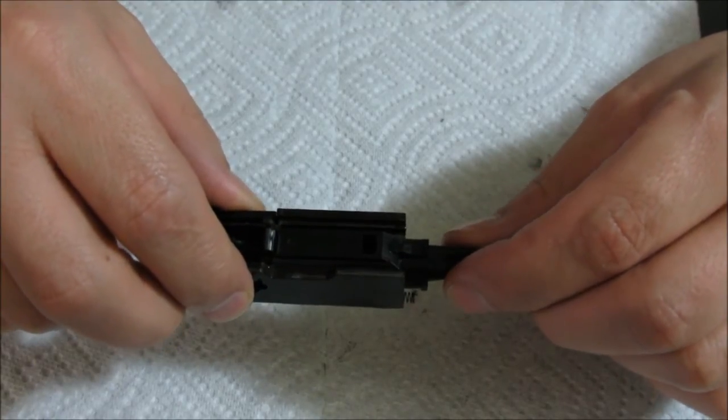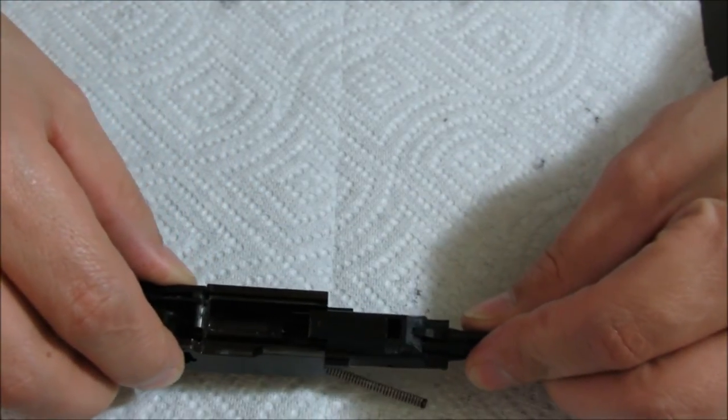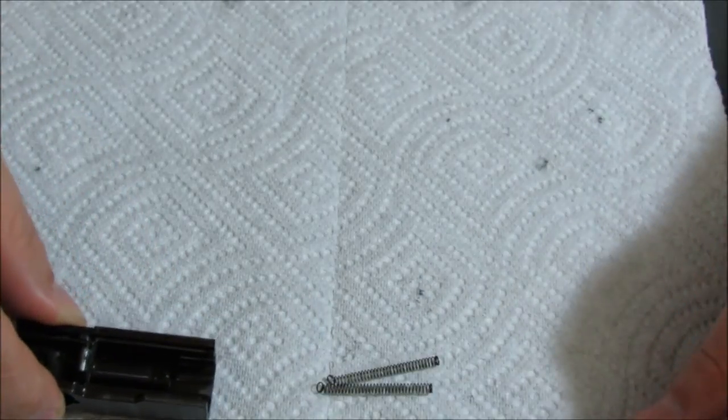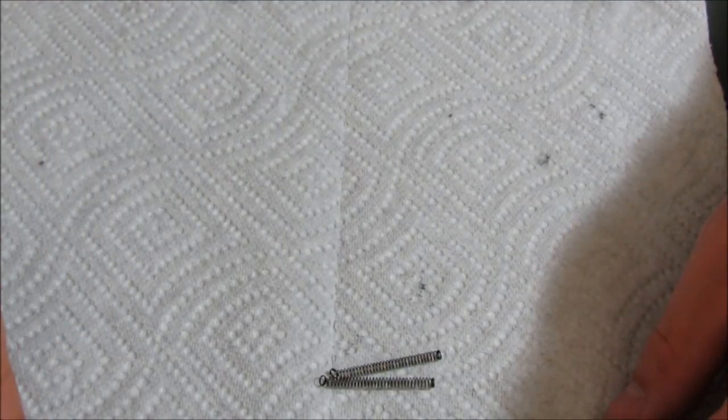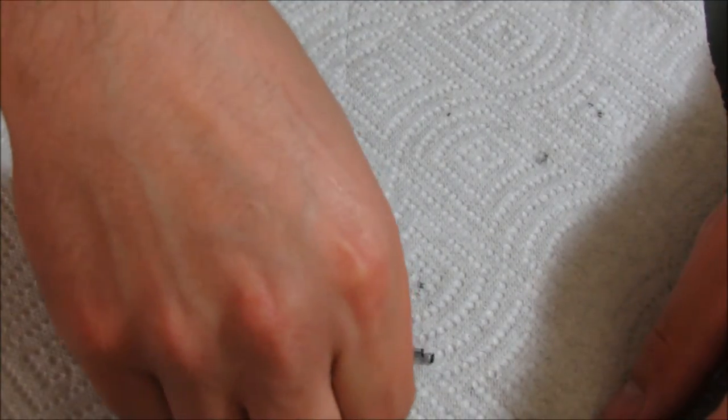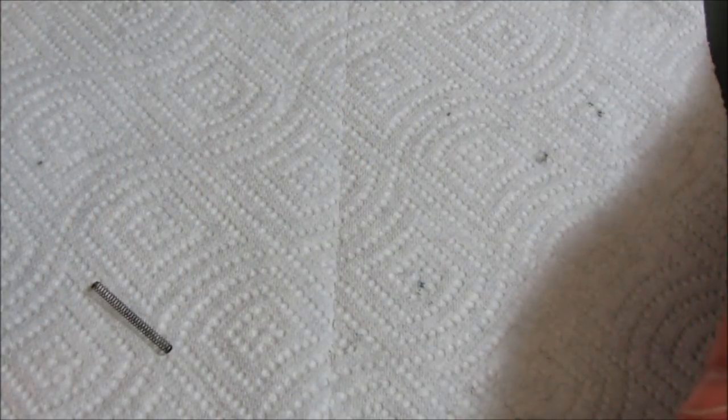All right, here's your cylinder. All you have to do is pull it off. Now, you're going to have two springs. Don't lose them. Set them off to the side.